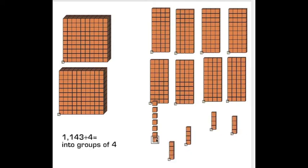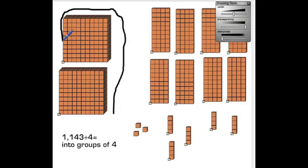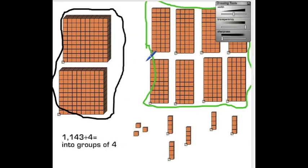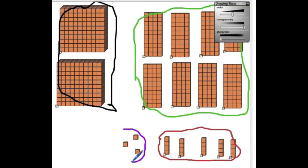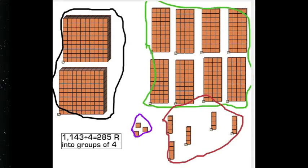I needed to know how many groups of 4 I had in 1,143. Well, I have 2 hundreds of 4. I also have 8 tens of 4 and 5 groups of 4. Don't forget the remainder. This adds up to 285 with a remainder of 3.